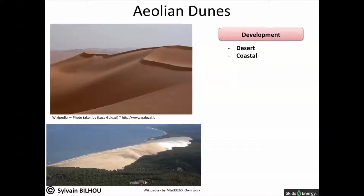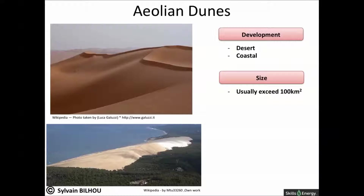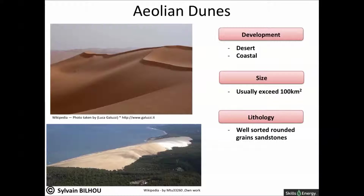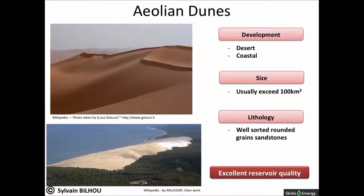Some dunes do occur alone, but more often they occur in massive sand areas. They are large sedimentary bodies which commonly exceed 100 square kilometers. They contain well-sorted round grains, and where cementation is avoided, such reservoirs will be both porous and permeable. Aeolian sandstones are uncommon as reservoirs because they have low preservation potential, but the reservoir quality of most aeolian sandstones may be excellent.